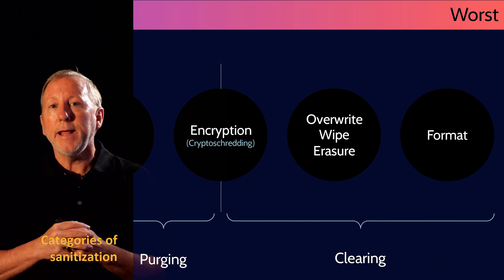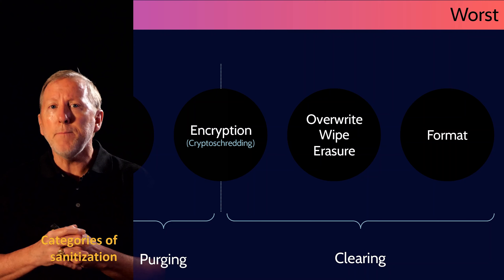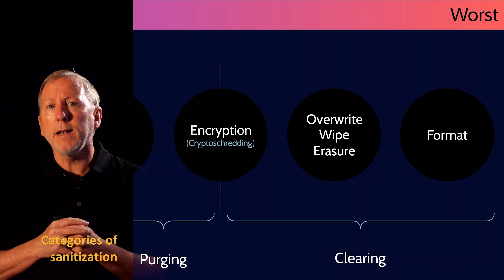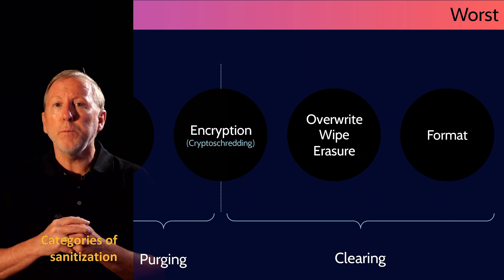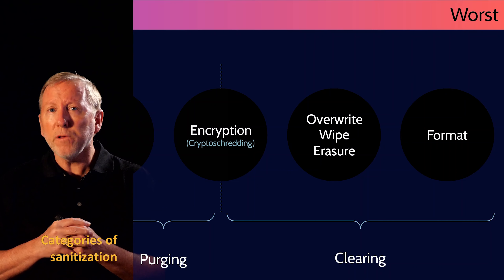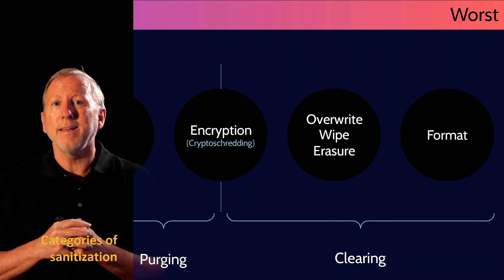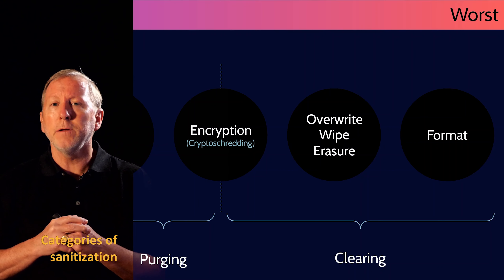Clearing is a data deletion technique where data may not be reconstructed by any known means. Overwriting, wiping, erasing, and formatting are all common clearing techniques. Similar to degaussing straddling destruction and purging, encryption straddles purging and clearing. This is because crypto shredding, if done properly, should render the data purged and unrecoverable, but the encrypted data is still there. If a new weakness was found in the encryption algorithm, or quantum cryptography suddenly becomes a thing, then maybe the data could be recovered, and therefore it's not purging, but clearing — it straddles the two types of sanitization.